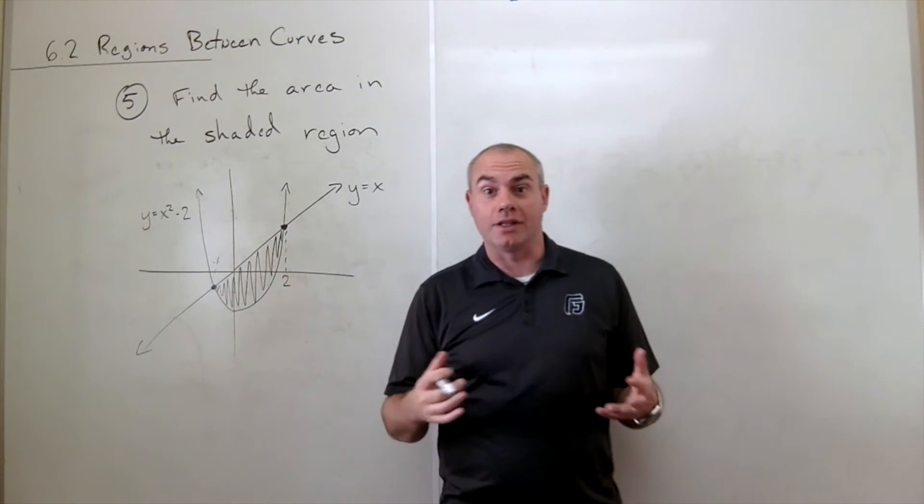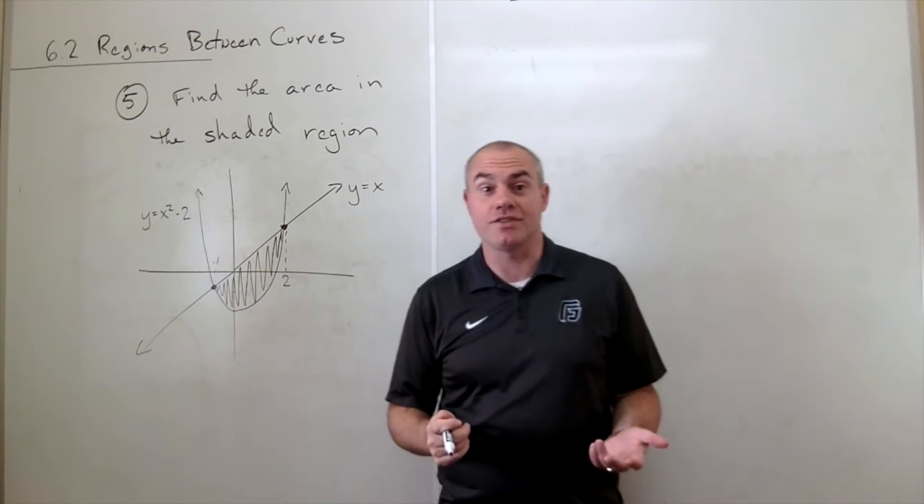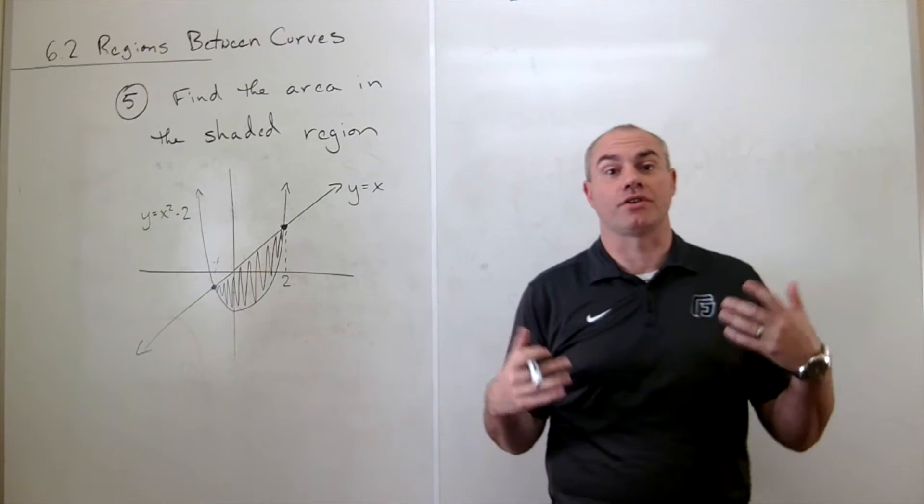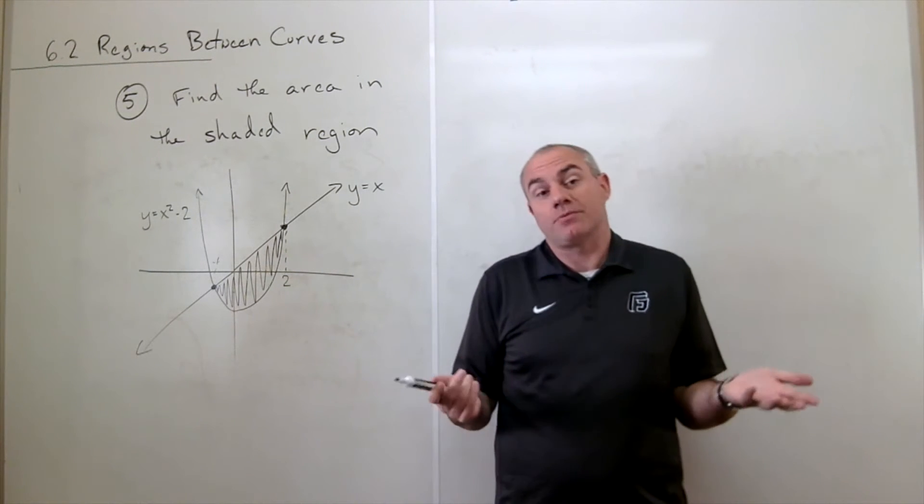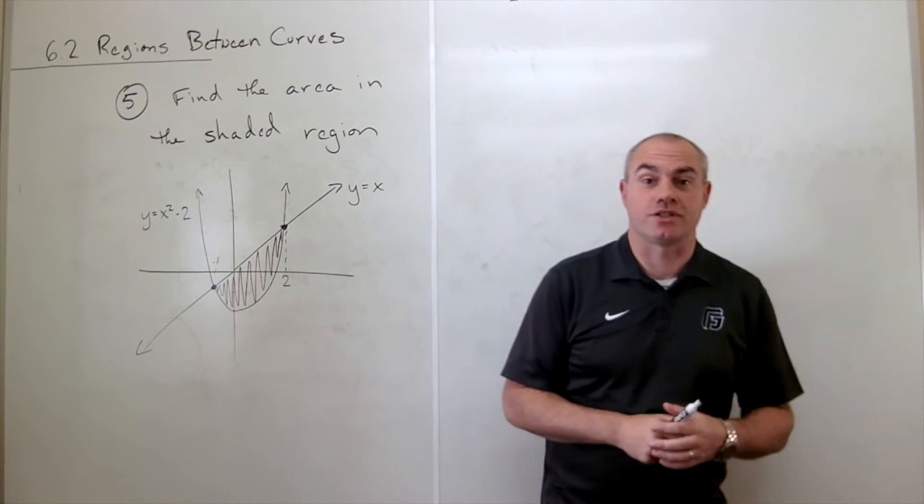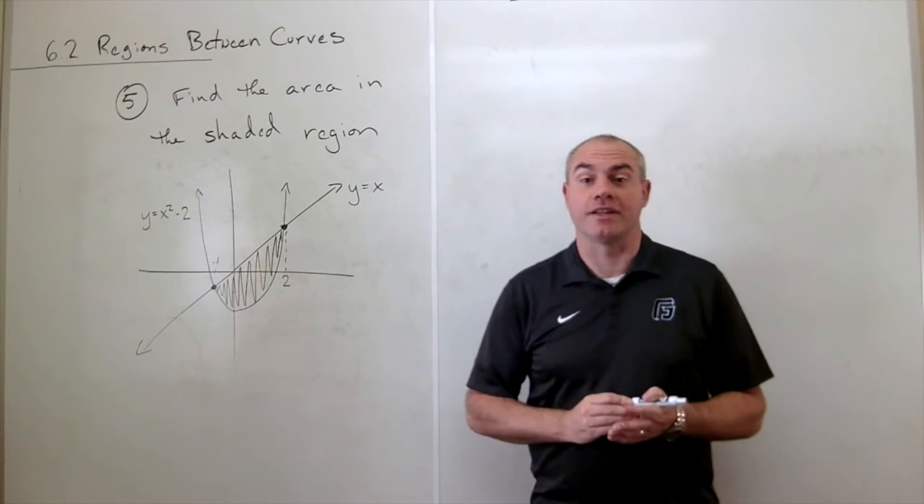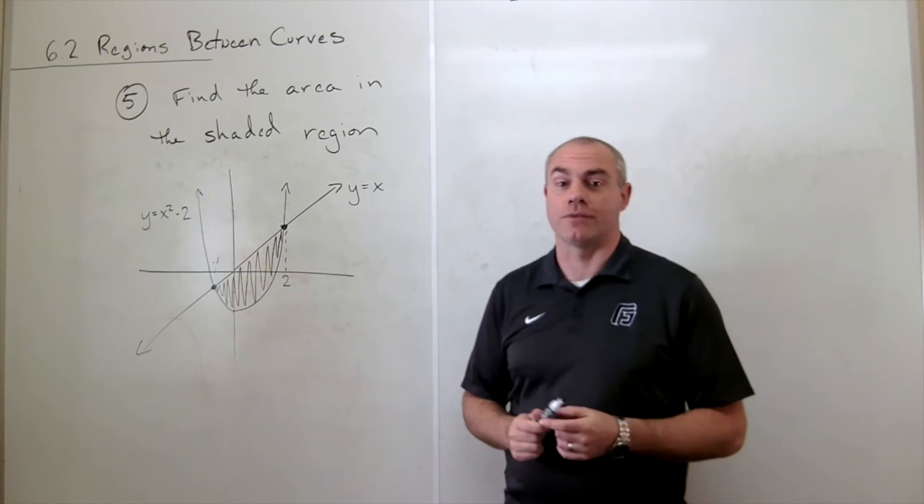Now, eyeballing these types of things can be helpful, and it's much easier than setting them equal to each other and solving. But sometimes we can't do it, and in those cases, we just need to set the two equations equal to each other and solve for x. So whatever's easier in the situation is the best thing to do.